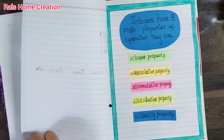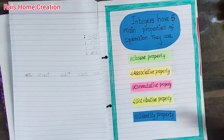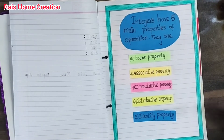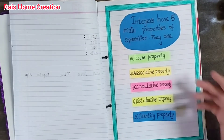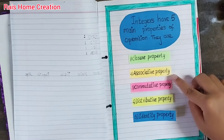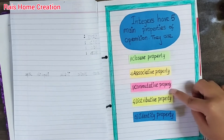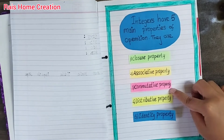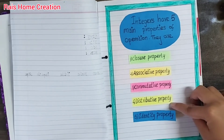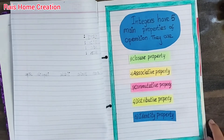The next page shows that integers have five main properties of operation. They are: closure property, associative property, commutative property, distributive property, and identity property.